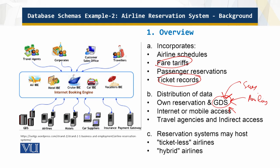There are travel agencies and other indirect distribution channels as well. Some airlines have their own reservation systems for their own operations. These systems are 98% ticketless, but there are hybrid airlines also. We have this GDS connected to airlines, hotels, and car suppliers, all connected through an internet booking engine.